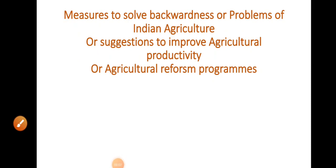Good morning my dear students. I hope you are understanding my videos very well. With this series I am continuing to present another topic of economics. Today we are going to discuss the measures to solve the backwardness or problems of Indian agriculture. If you have listened to my previous video, I have already discussed the various problems of Indian agriculture — its importance and how much important our agriculture is for us.